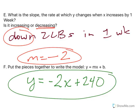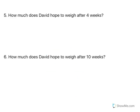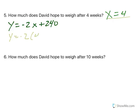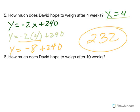And we can do a lot of things to figure out how this works, right? So, how much does David hope to weigh after four weeks? Well, remember, that means x is 4. So, if I have y equals negative 2x plus 240, I can go ahead and say, let's plug in that 4 for x. So, y equals negative 2 times 4 plus 240. When I solve this mathematically, I do multiplication first. So, negative 2 times 4 is negative 8, plus 240. That means David hopes to weigh 232 pounds after four weeks.